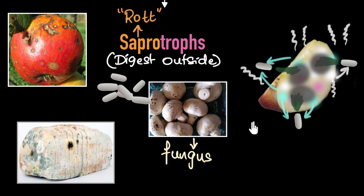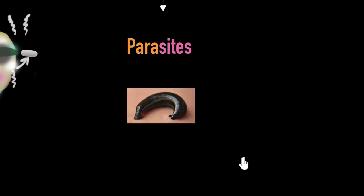And finally, what if you can't digest food at all, whether inside or outside? Then you become a parasite. Parasites hardly digest any food. Then how do they get their nutrients? Well, they depend on a host, meaning another living organism.